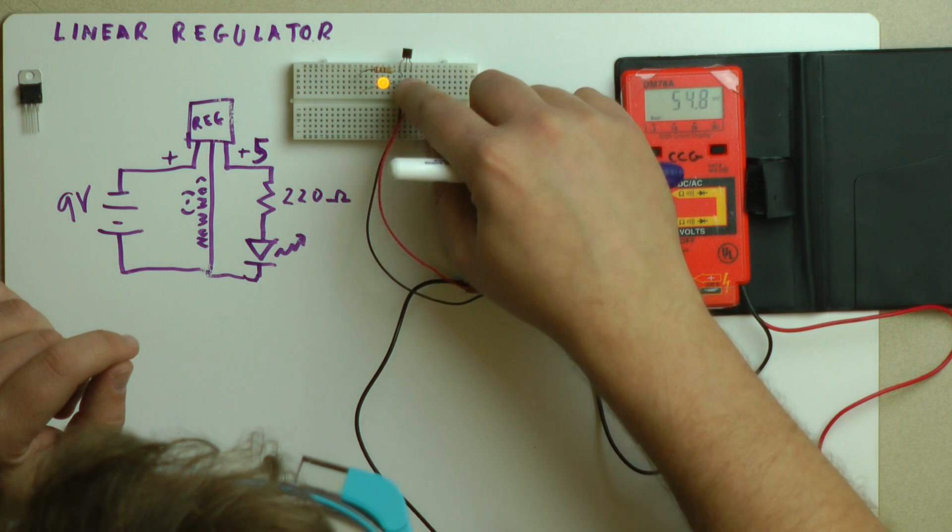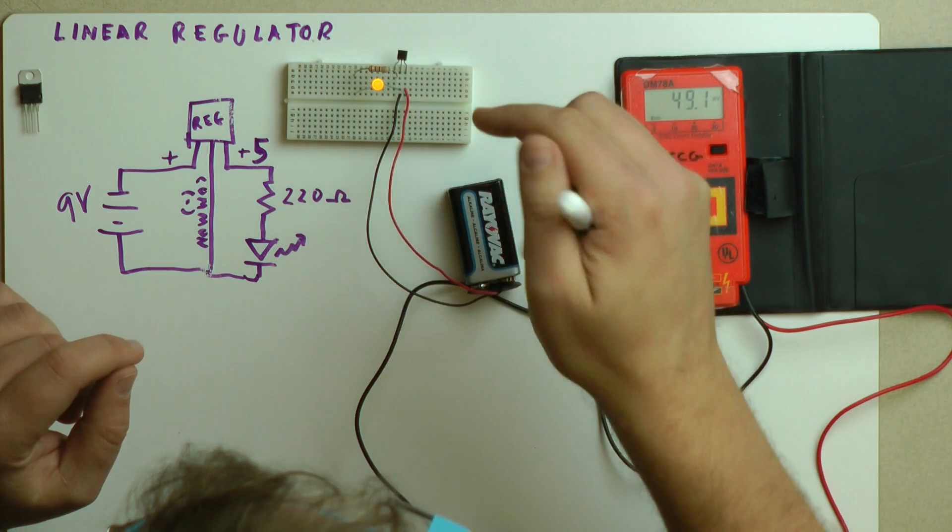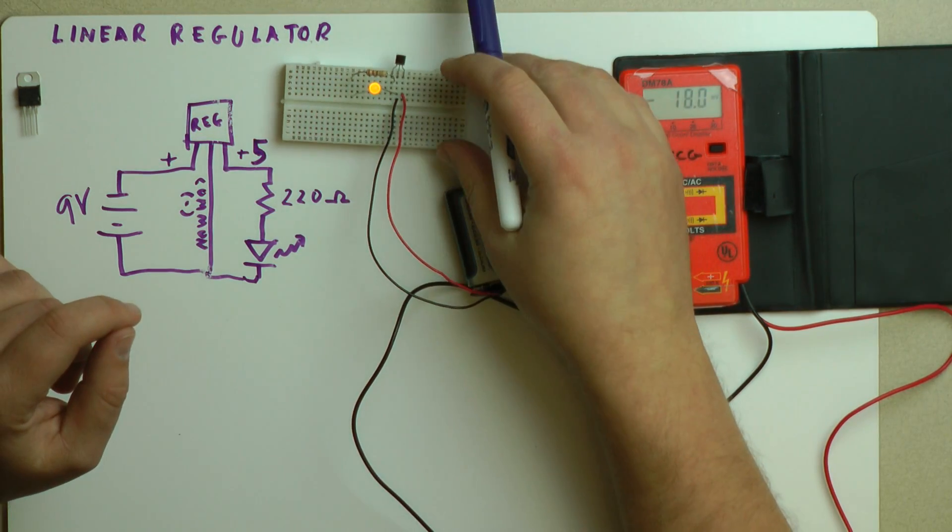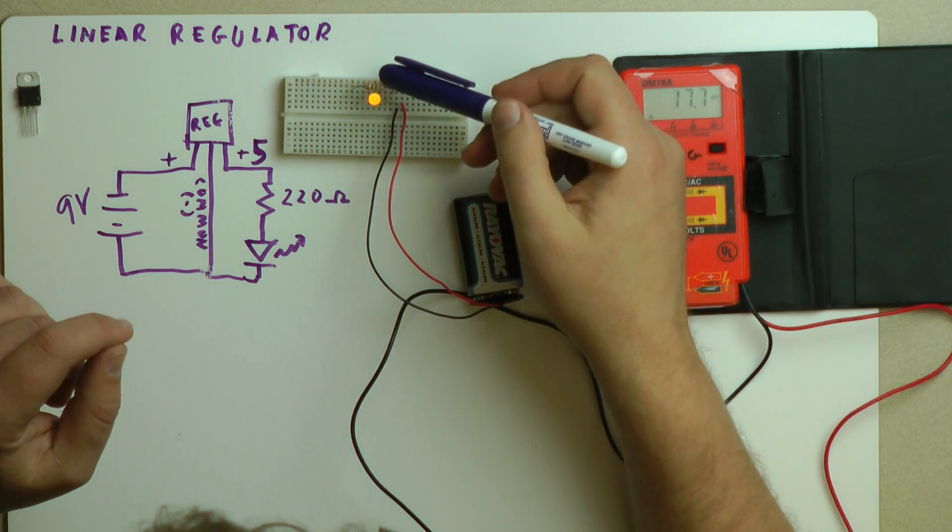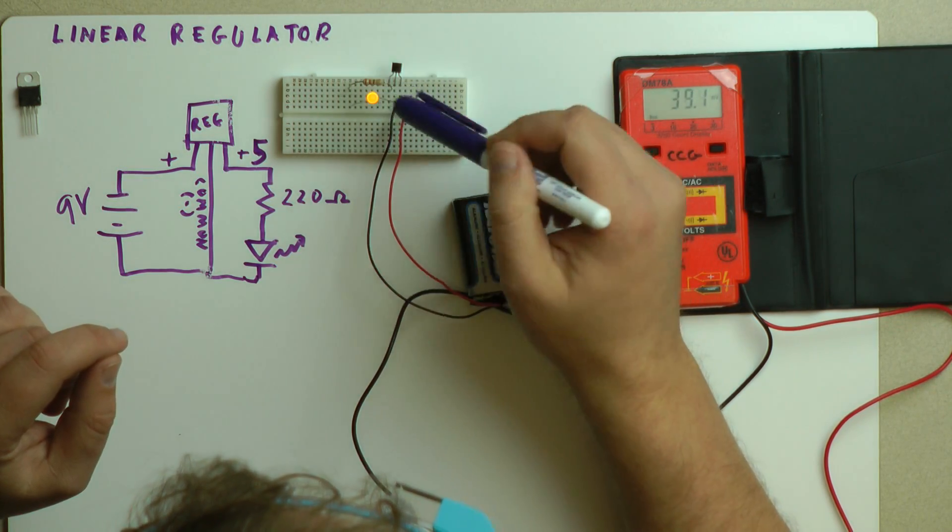You can see everything is hooked up. In this case, we've got 9 volts going in on the input side, which is on the right side of the linear regulator from your viewpoint, and the resistor is 220, red, red, brown as expected, and the LED going from the resistor to the ground.